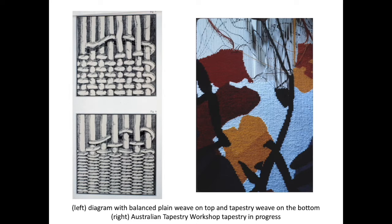In addition, each weft color weaves only in the areas where it is needed — it does not travel from one side of the fabric to the other. This is referred to as discontinuous weft. The red travels back and forth, under, over, under, over, just within the shape that is red. Colors build shapes and other colors fill in around those shapes. Tapestry is usually defined as weft-faced plain weave with discontinuous wefts, although as with any definition, there are those who would beg to differ.